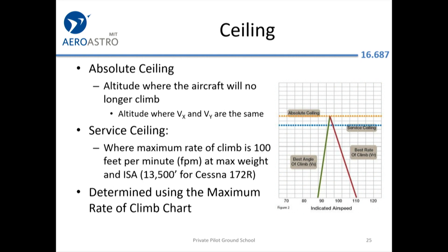The service ceiling is a little below the absolute ceiling — that's where the FAA says the plane will climb 100 feet per minute, or where the manufacturer demonstrated at least 100 feet per minute when the airplane was brand new. That's 13,500 feet for a Cessna 172, pretty typical for normally aspirated four-seaters. The Cirrus has a limitation that says maximum operating altitude is 17,500 feet, though I think that's more regulatory. I've gotten it to about 13,000 feet out west in summer, barely climbing.